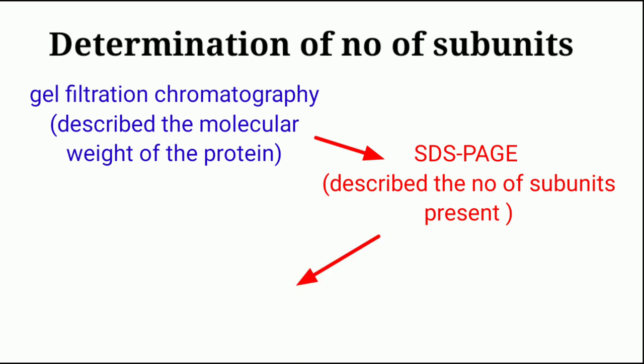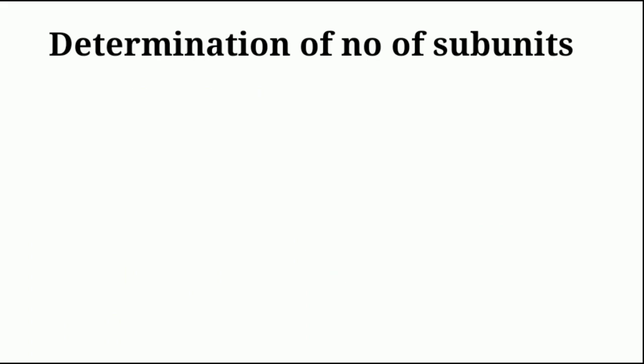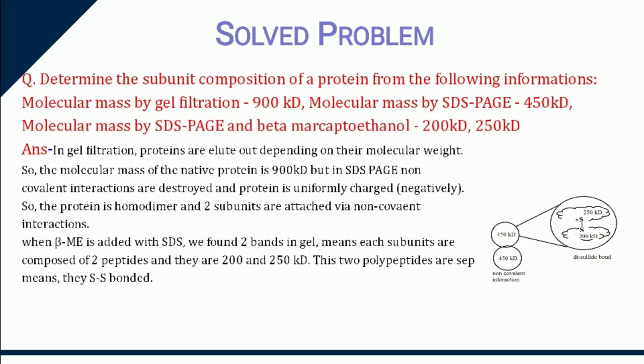Finally, disulfide bonds are broken by beta-mercaptoethanol and analyzed using SDS page. This method helps to identify if there are any subunits that are joined via disulfide bonds or not. Here, a 900 KD protein is analyzed and the following data are obtained. You have to find out the exact subunit composition of the protein. Again, you can pause the video and watch how I solved it.